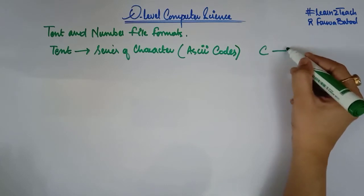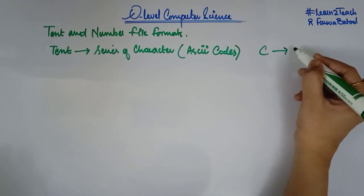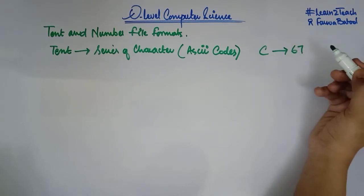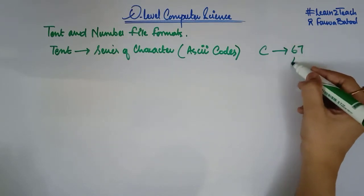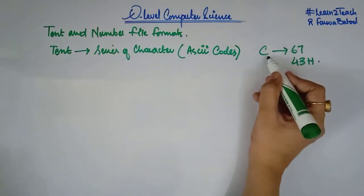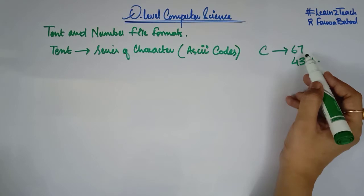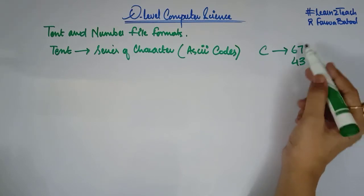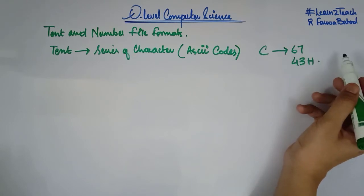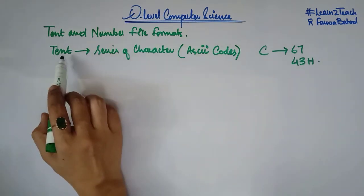For example, if I have a character C, then the decimal equivalent of the ASCII code is 67, or the hexadecimal would be 43. Every character has a particular ASCII code that can be written in terms of decimal or hexadecimal value, and it can also be converted into binary form so that it can be stored in memory.